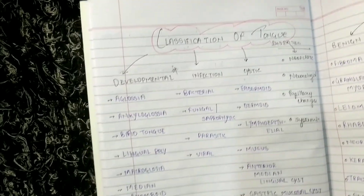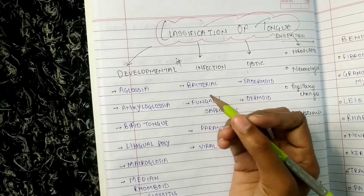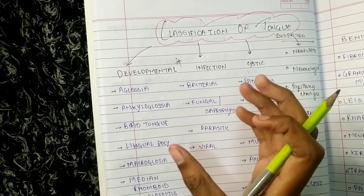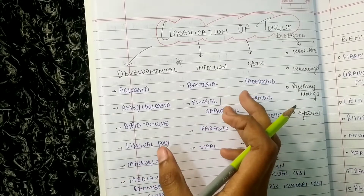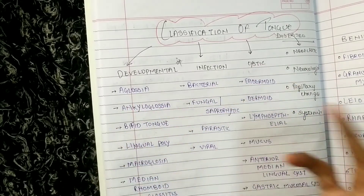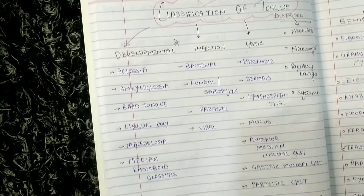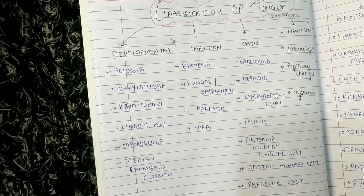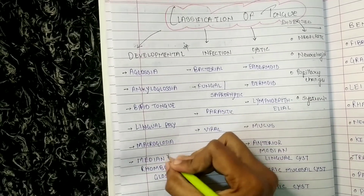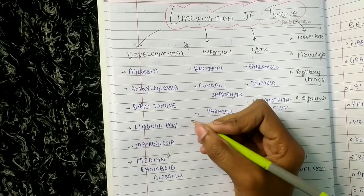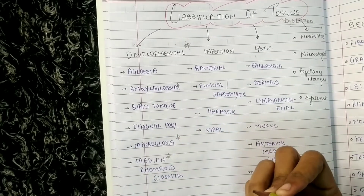In developmental disorders, we have aglossia, also called microglossia or hypoglossia — meaning the tongue size is either very small or there is absence of tongue. Then we have ankyloglossia, bifid tongue, lingual polyp, and macroglossia.